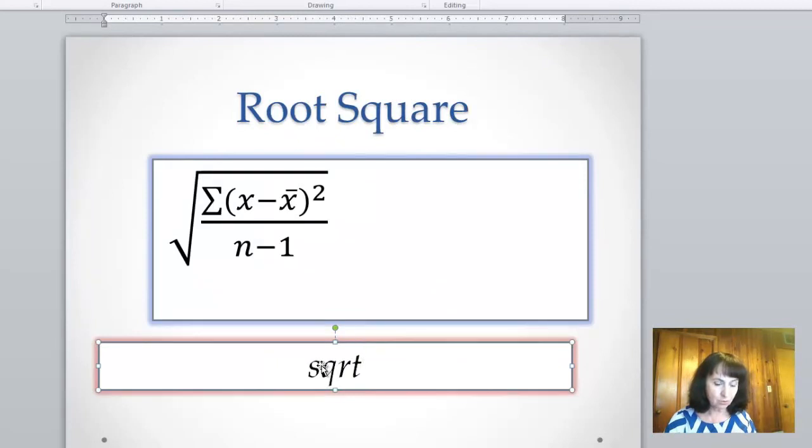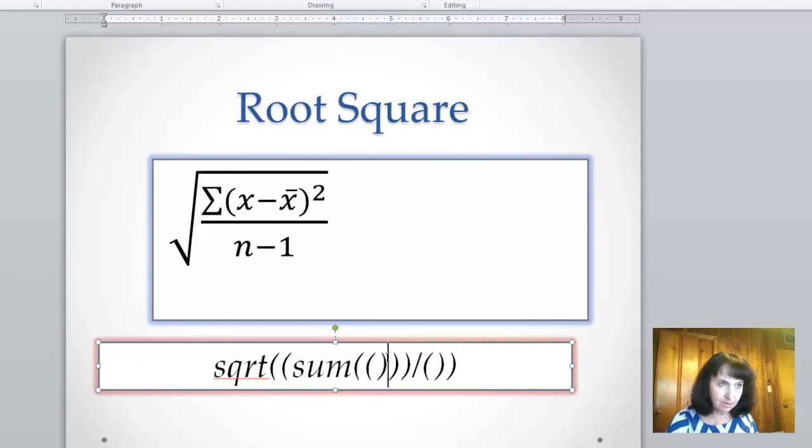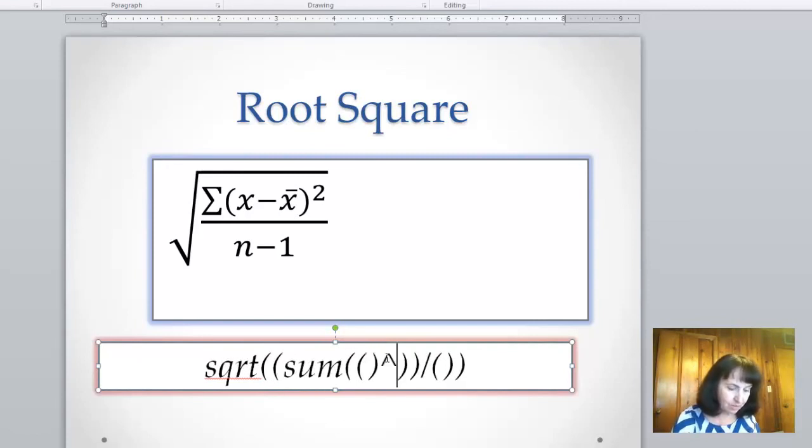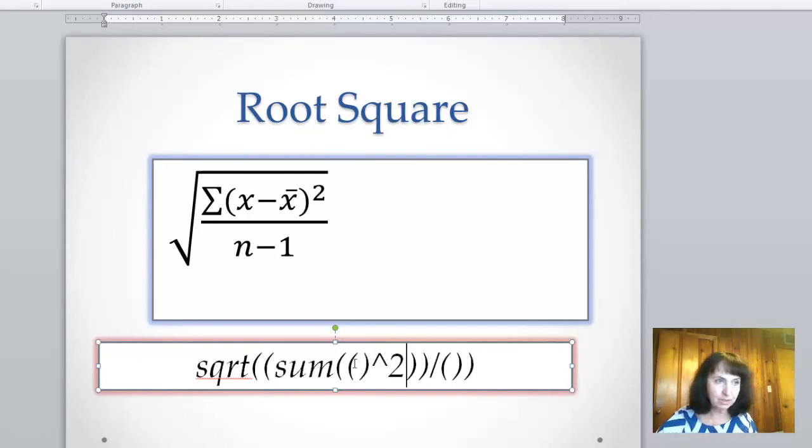Sqrt, root square, and then very carefully use the fact that it has a fraction. On the top of this fraction, you have sum of something that is squared. So this sum is something to the power of 2. You see how I need quite a bit of parentheses.